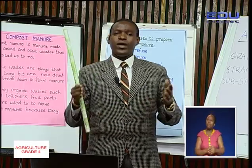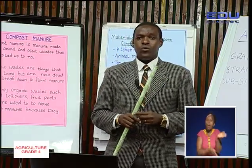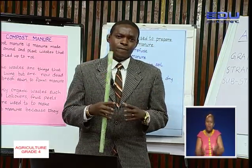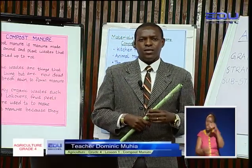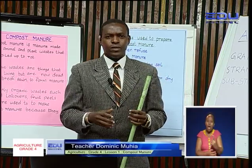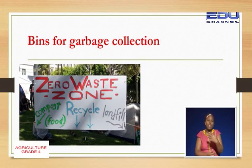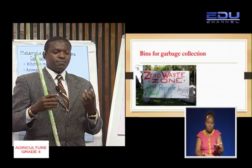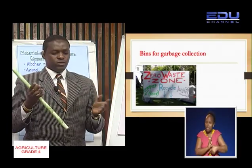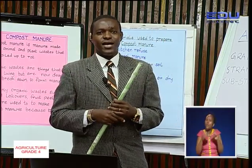Next, we are going to look at where we store these wastes. At home or back in school, we need a garbage collection — we need bins where we can store our garbage. It is not good to mix all garbage in one pit or one bin. It is good to have a bin for the compost where we store the food waste, and another bin for items that we can recycle, like bottles and bottle tops.